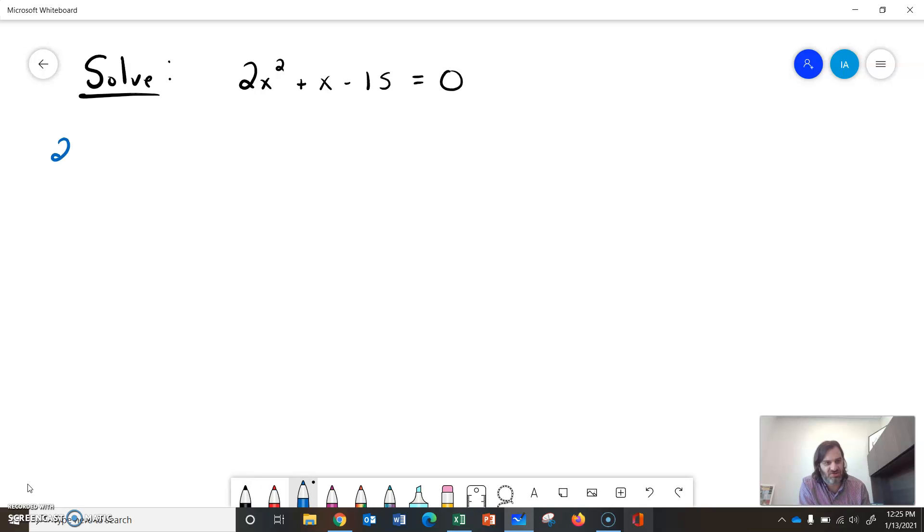So let's see here, we've got 2x squared plus x minus 15. Nothing will pull out of there because there's no common terms right now, so let's identify the parts.